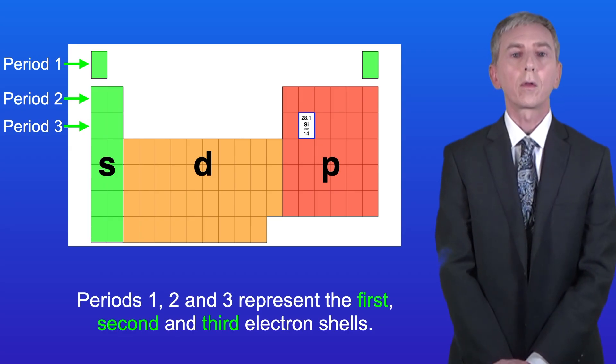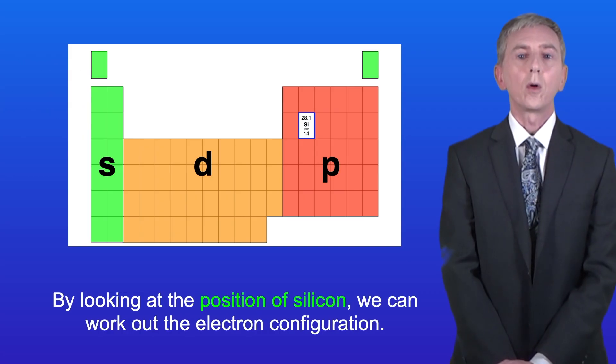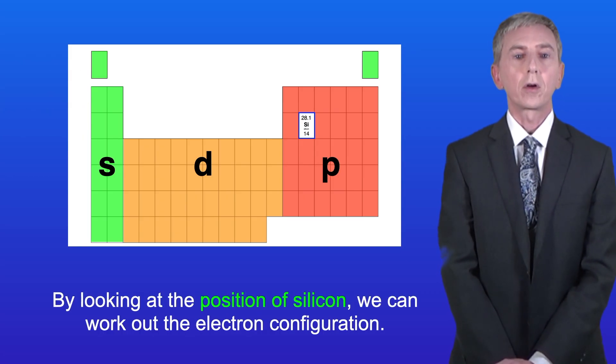Periods 1, 2, and 3 represent the first, second, and third electron shells. So by looking at the position of silicon, we can work out the electron configuration.